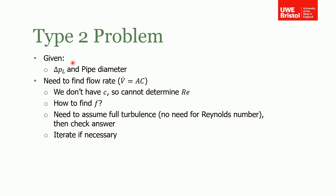The Type 2 problem is a little more complicated. If we know the pressure drop and the pipe diameter and we need to find the flow rate, the problem is that we don't know the velocity. If we don't know the velocity, we can't determine the Reynolds number, and if we can't determine the Reynolds number we can't find the friction factor. The way to do it is to assume full turbulence, because in the fully turbulent regime the friction factor is independent of the Reynolds number — it's only dependent on the relative pipe roughness. So you assume it's fully turbulent, calculate a friction factor, calculate the velocity, and iterate as necessary.